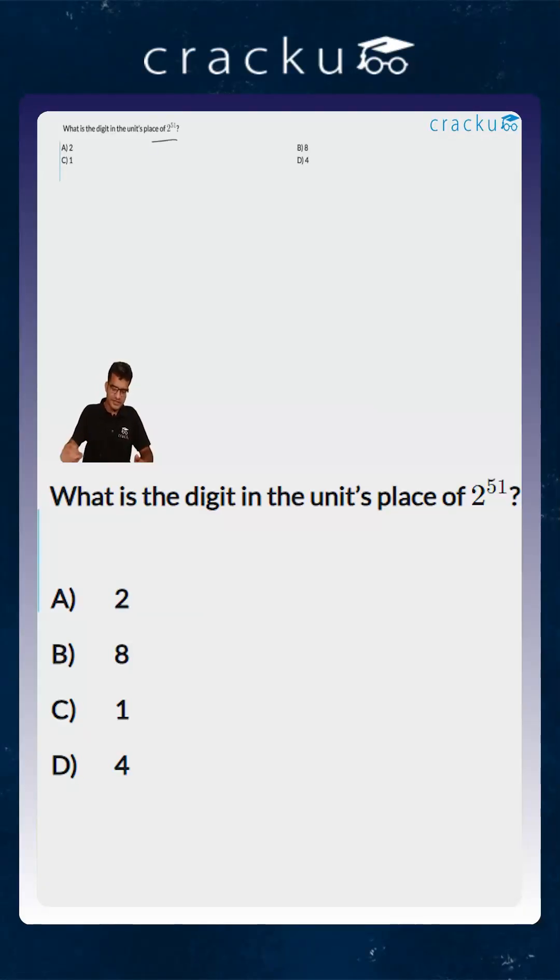In this question we are asked to find out the units digit in 2 to the power 51. Whenever you are given this kind of question, you should remember that there is a cyclicity involved. If you are looking at the units digit or the hundreds digit, the pattern always repeats. After a point of time, you will be able to identify the pattern.